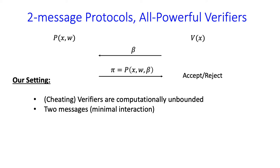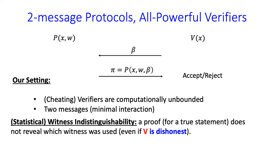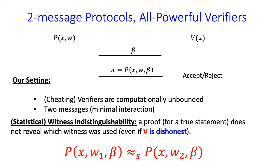In this work, we narrow our scope to the following setting. First, we're interested in getting statistical security against the cheating verifier. But second, subject to that, we want to minimize the amount of interaction between the prover and verifier, which means considering a two-message protocol. Unfortunately, full zero-knowledge is impossible to achieve in the two-message protocol, so we relax our security notion against the verifier to witness indistinguishability. This says that when a statement x has multiple witnesses, the proof generated using witness w1 is indistinguishable from one generated using witness w2.